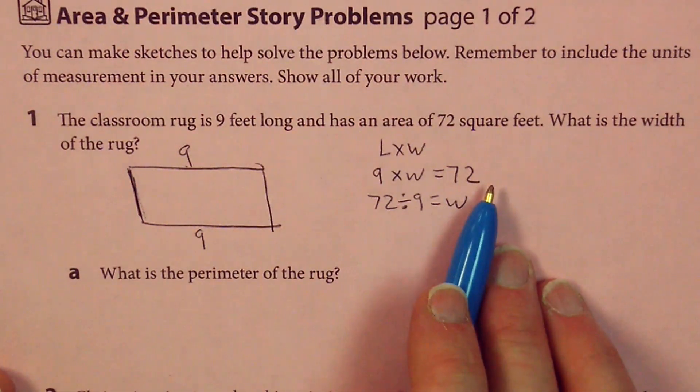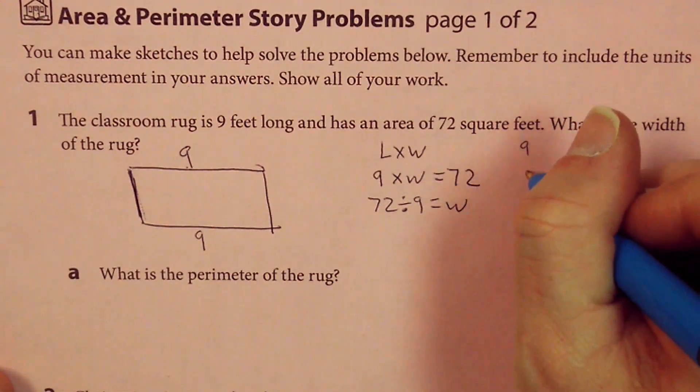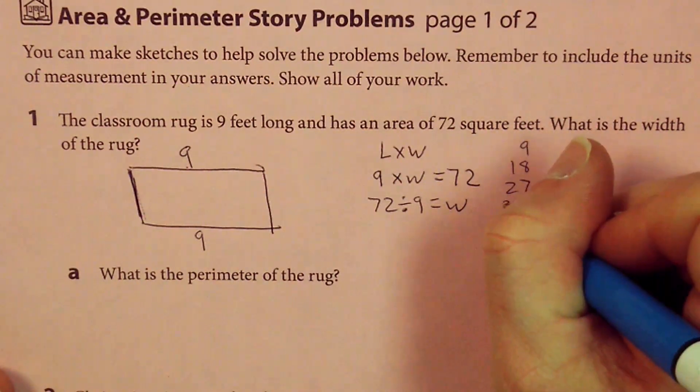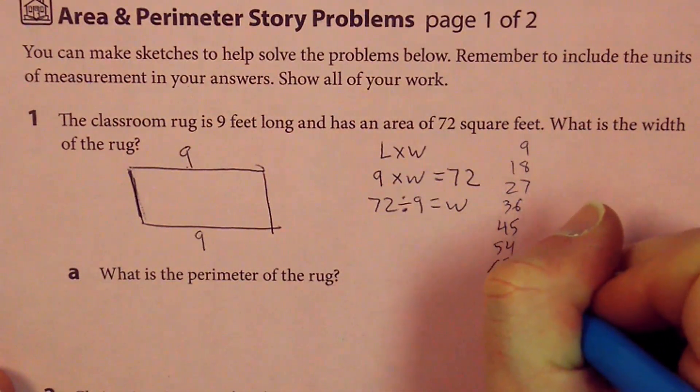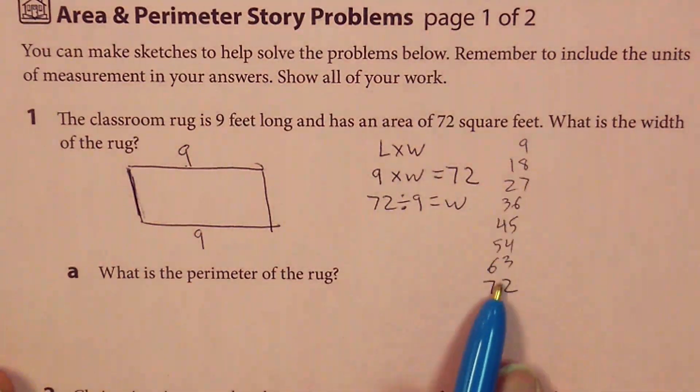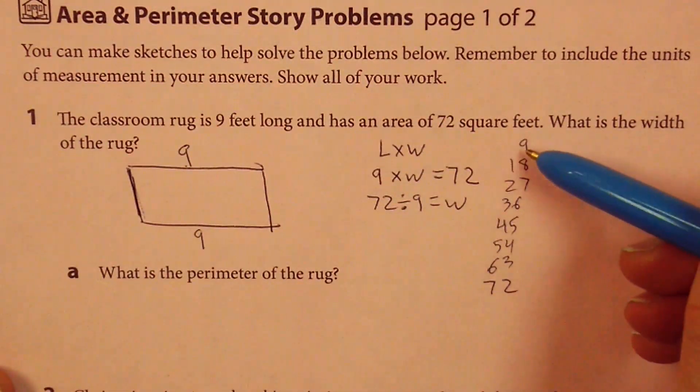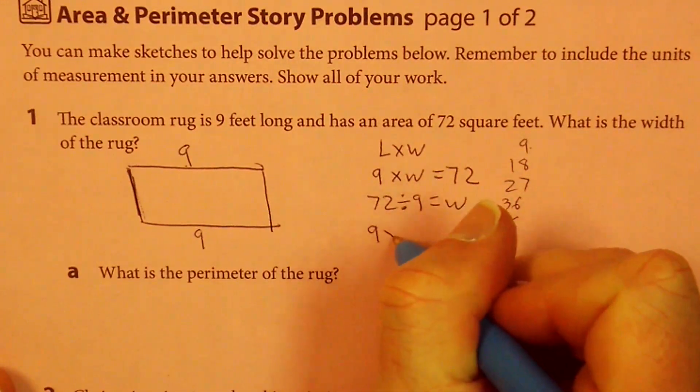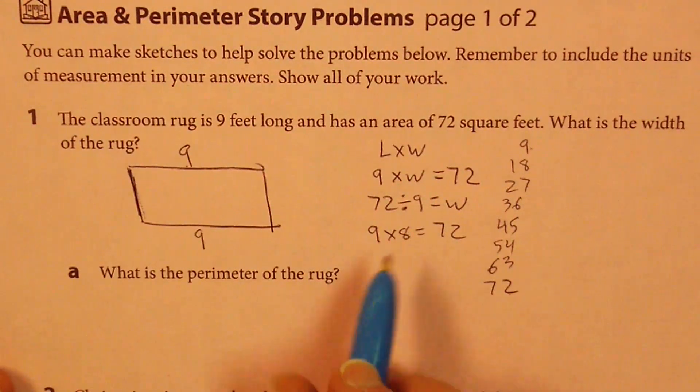However you want to do this is perfectly fine. You could count by nines. You could say nine times one is nine, nine times two is 18, 27, 36, 45, 54, 63, 72. You could just do your math facts to figure out what it is, but nine times what is 72? Nine times eight is 72. So our missing dimension is eight.